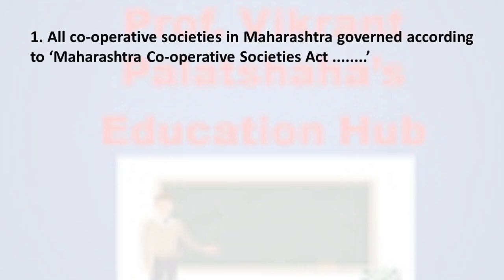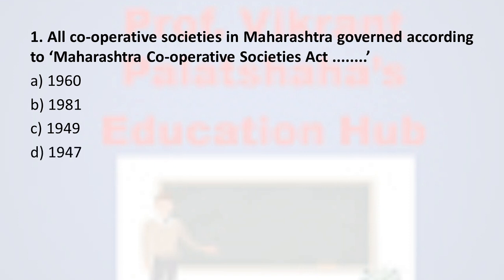Question number 1: All cooperative societies in Maharashtra are governed according to the Maharashtra Cooperative Societies Act, ___. Option A: 1960. Option B: 1981. Option C: 1949. Option D: 1947. The correct answer is option A, 1960 — the Maharashtra Cooperative Societies Act, 1960. Therefore, the correct option is option A.